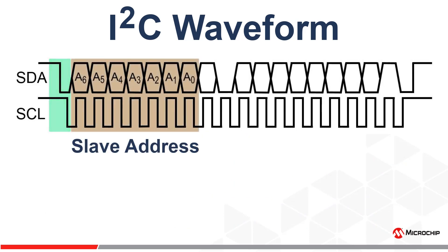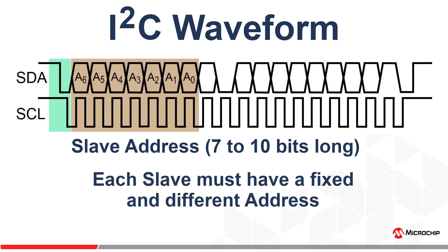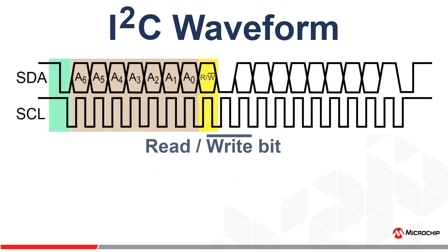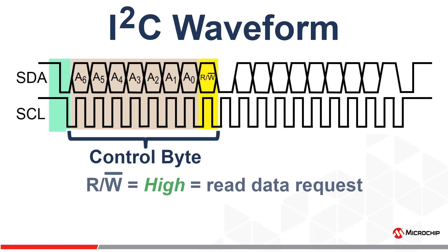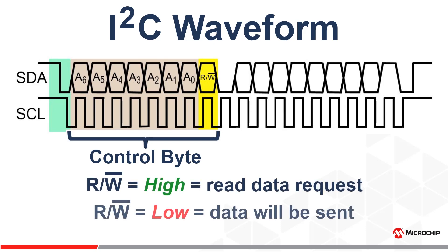The slave address immediately follows the start condition, and it can be 7 bits or 10 bits long, although the 7-bit slave address is by far the most common. The slave address will be specified in the device datasheet, and it is important to note that each device on the I2C bus needs a unique slave address. Next is the read/write bit, which immediately follows the slave address and together with the slave address forms the control byte. This bit informs the slave if the master wants to read or write. A 1 indicates the master wants to read from the slave, and a 0 means the master will write to the slave. This is easy to remember by looking at the R/W symbol, as there is a bar over the W, meaning low is its active state.